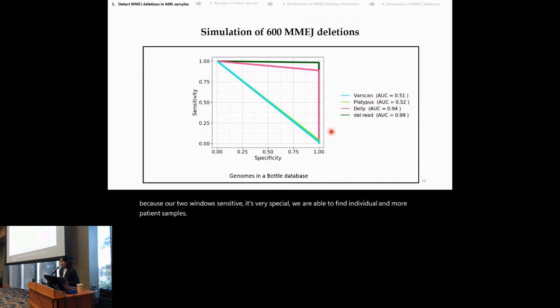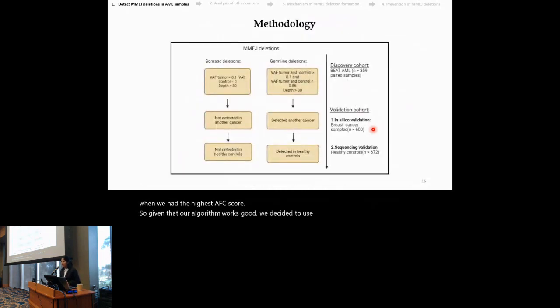Next, we also artificially created about 600 MMG deletions and tested the performance of other variant callers and our tool to see if we are able to detect these deletions. We saw that our tool, DelFI, had the highest AUC score. So, given that our algorithm works good, we decided to use this algorithm to find novel, somatic, and germline MMG deletions.